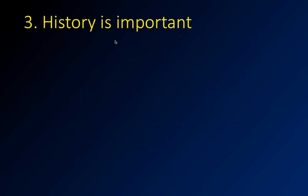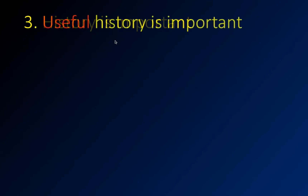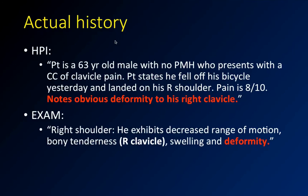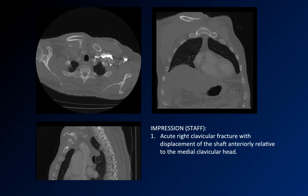I just called it non-specific — maybe this guy fell down, correlate with physical exam. But here's the thing: the useful history is that this guy fell off his bicycle, has 8 out of 10 pain, and has an obvious deformity to his right clavicle. That is a huge difference from just saying his shoulder hurts.